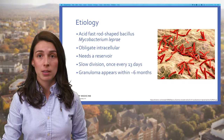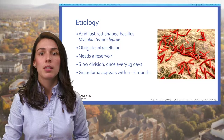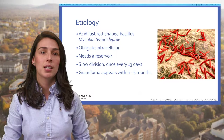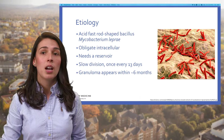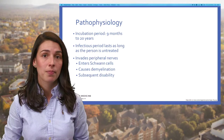Mycobacterium leprae is an acid-fast, rod-shaped bacilli. It is an obligate intracellular organism that preferentially proliferates in tissues with cooler temperatures. The organism exhibits the longest reproduction time among all bacteria, requiring 13 days to replicate. Typically, the granuloma appears at the inoculation site up to six months after infection has been produced.